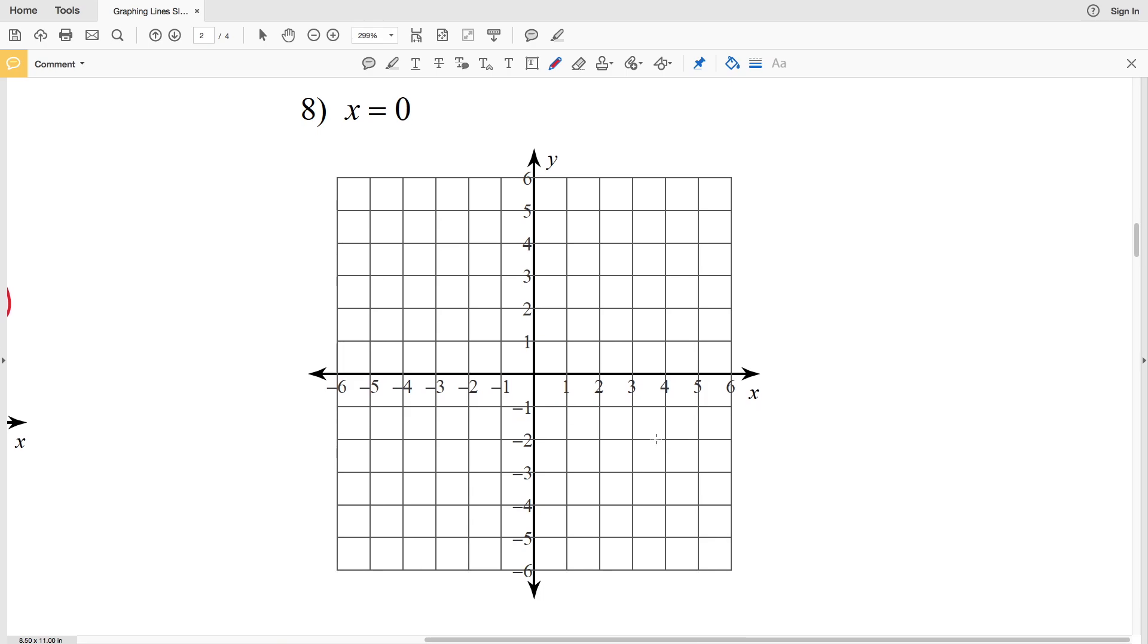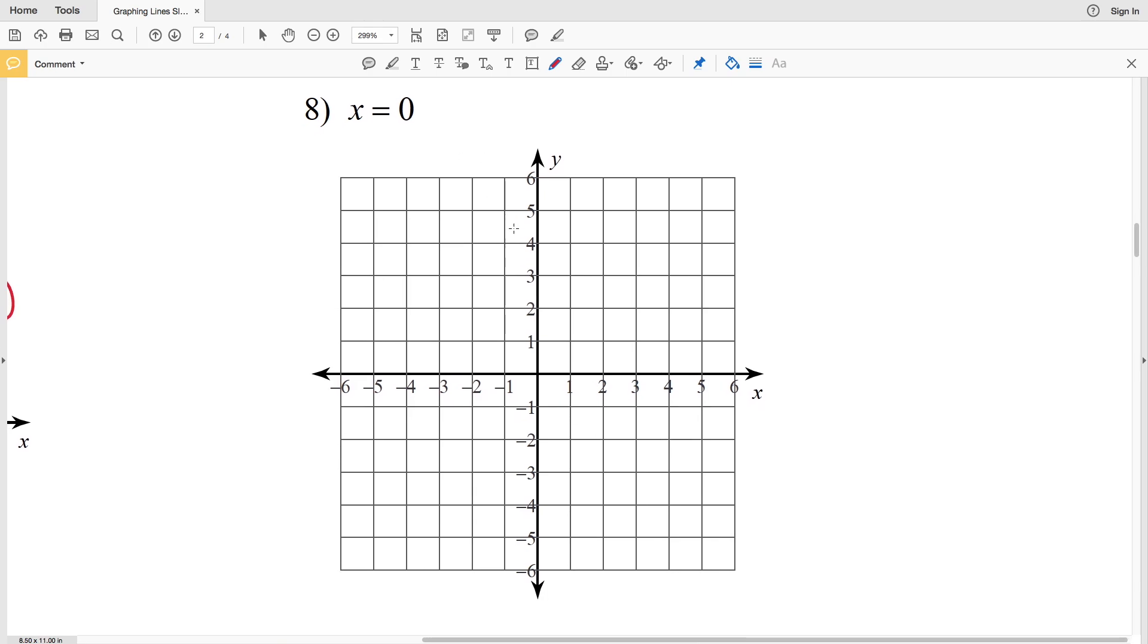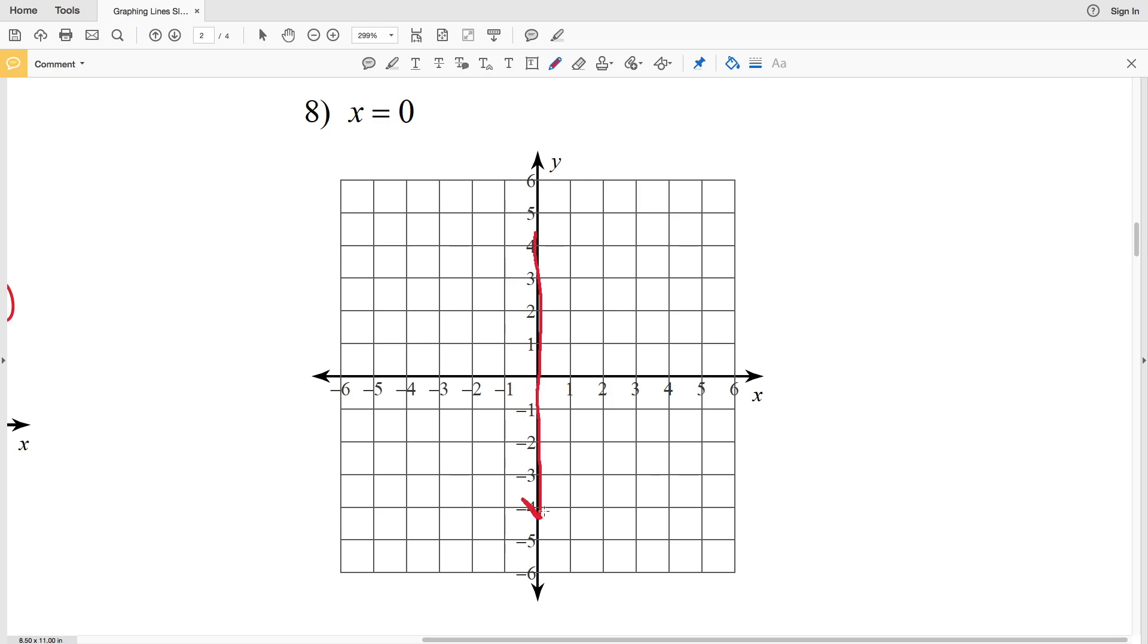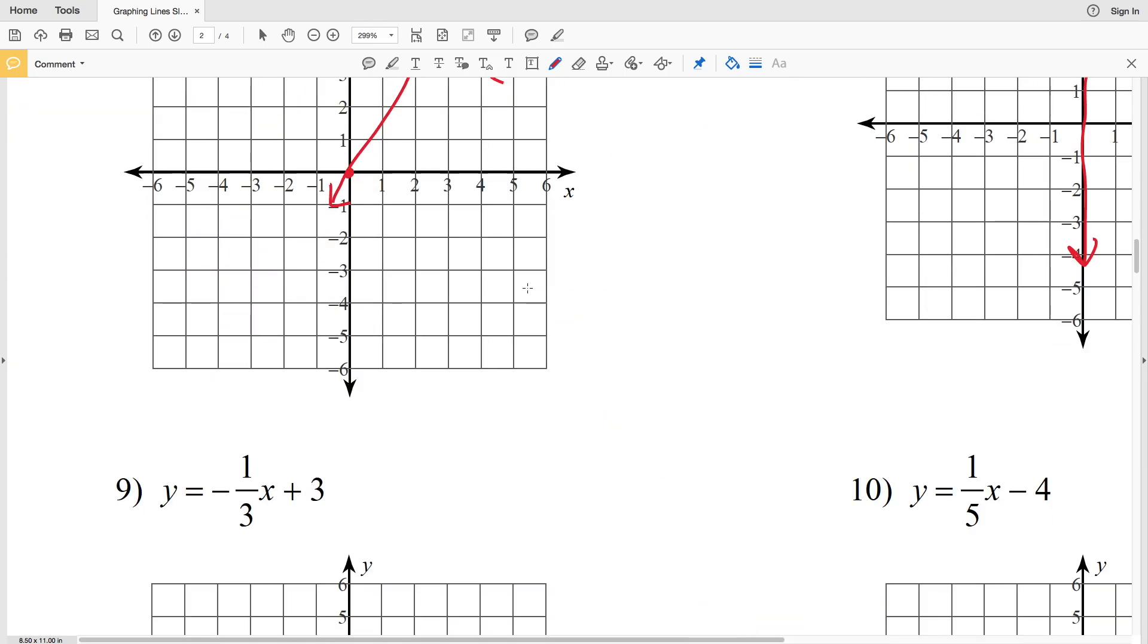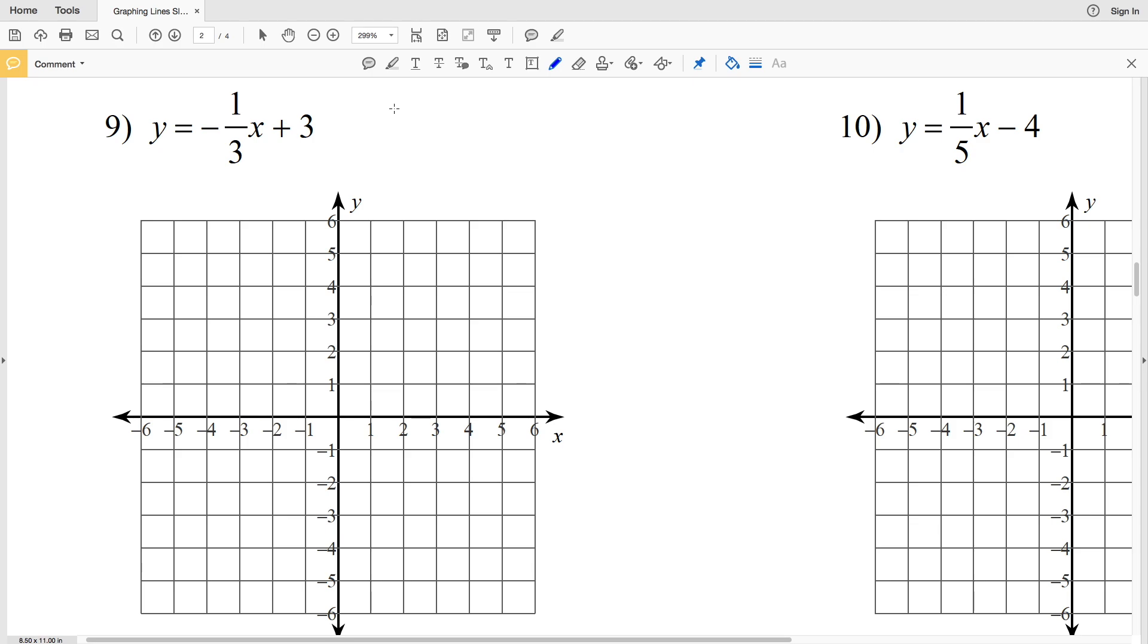Moving on to number eight we have x equals zero. X equals zero, that's going to be a vertical line along the y-axis and our slope is undefined. And number nine our slope is negative one-third and our y-intercept is a positive 3.